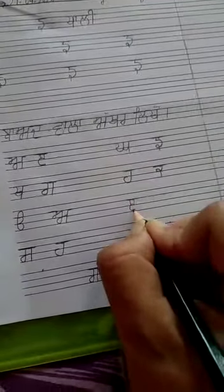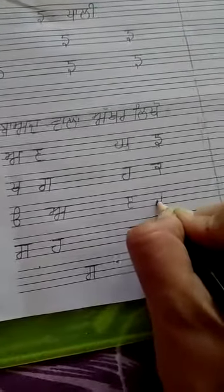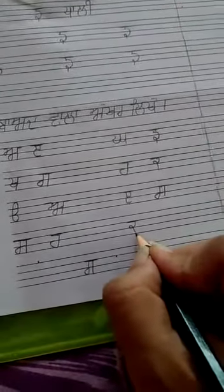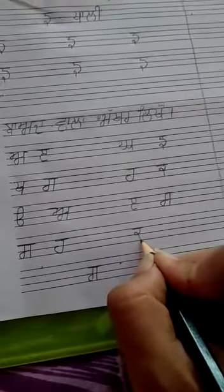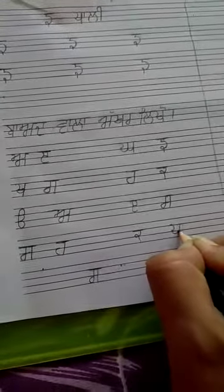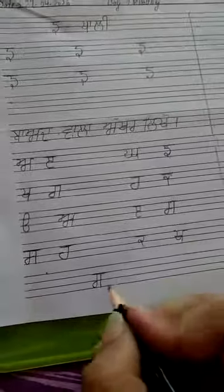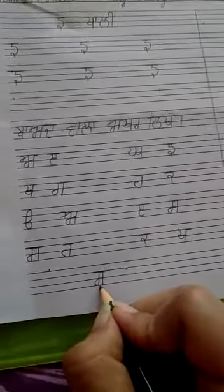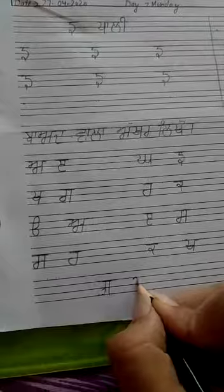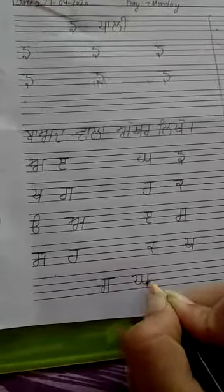Next. Idi It. Idi It to Baad — Sasa Sev. Next. Kakka Kabutar. Kakka Kabutar to Baad — Kakka Kham. Kakka Kabutar to Baad — Kakka Kham. Next. Gagga Gamla. Gagga Gamla to Baad — Kakka Kar.